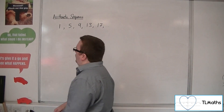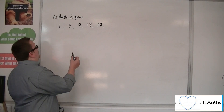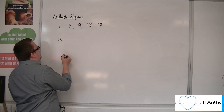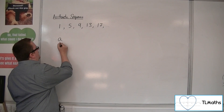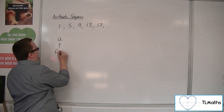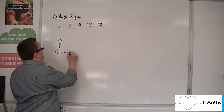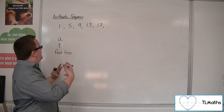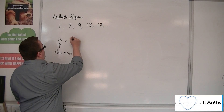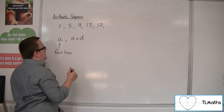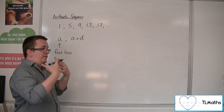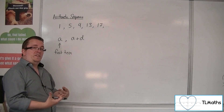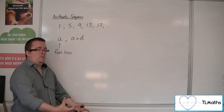The first term we refer to as A — that would be our first term. First letter in the alphabet, it's our first term. The second term is A plus D, because you have the first term A and you're adding on this amount. Regardless of whether D is positive or negative, it's A plus D.